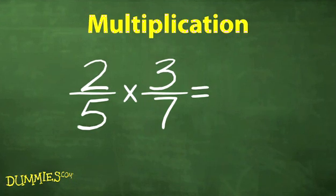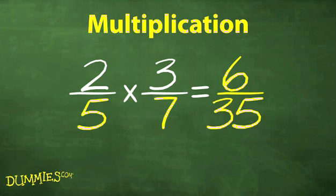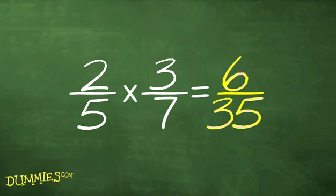To multiply two fractions, multiply the numerators, or the numbers on top, to get the numerator of the answer. Then, multiply the denominators, or the numbers on the bottom, to get the denominator of the answer. In this case, the answer is 6 over 35.